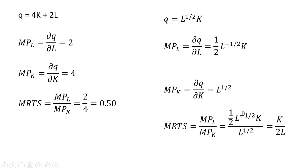Forming the ratio of those marginal products, we get this result. I'm going to take this L to the minus 1/2 and move that into the denominator. So in the denominator we'll have L to the 1/2 times L to the 1/2, which is just L. And so we get k divided by 2L as our marginal rate of technical substitution.